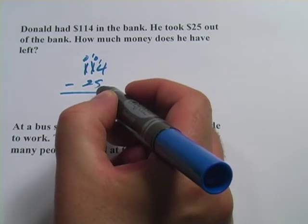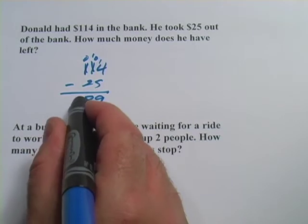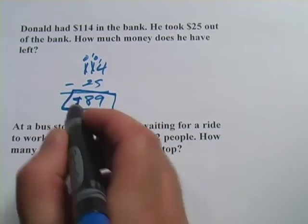And we've got 14 minus 5 is 9, and 10 minus 2 is 8. So Donald has $89 left in his bank account.